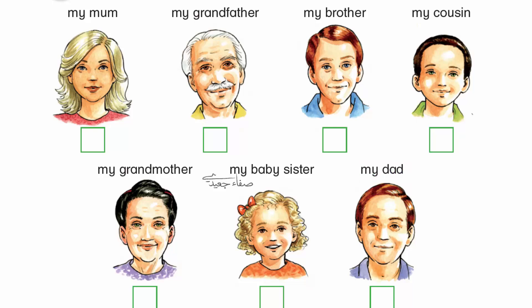She has blonde hair and blue eyes. It's my mum. She has blonde hair and brown eyes. It's my baby sister. She has black hair and green eyes. It's my grandmother.